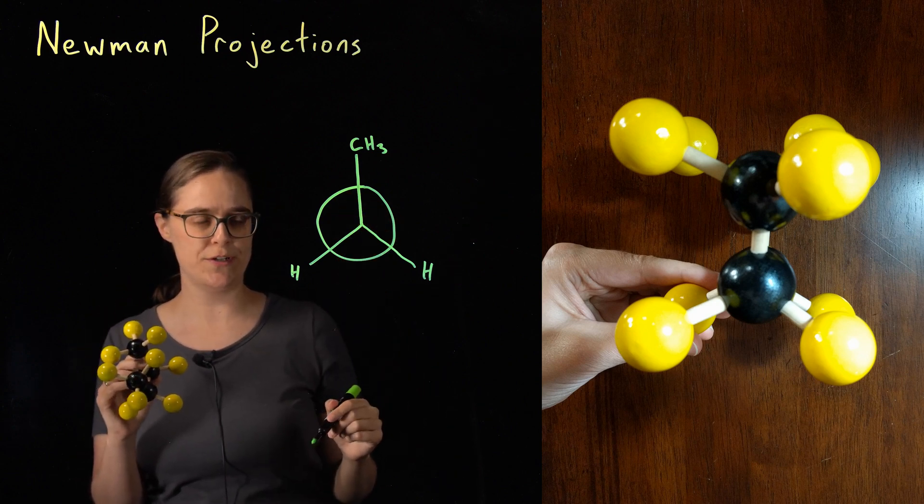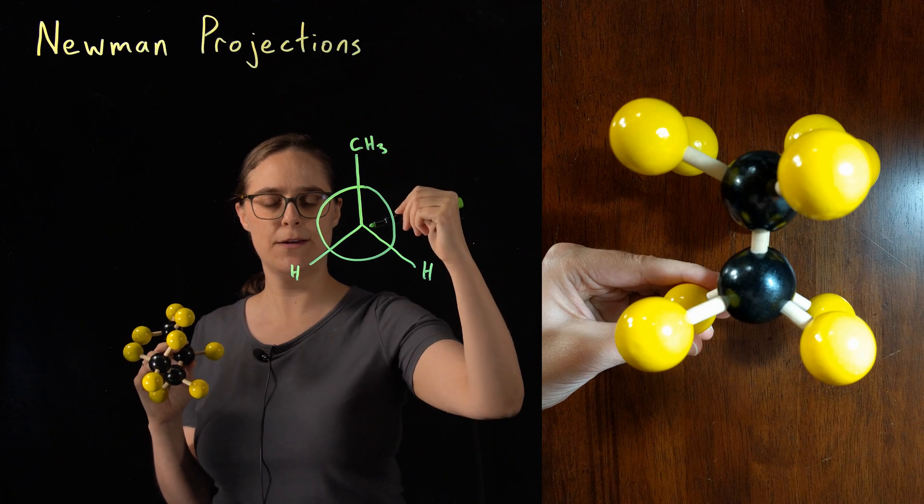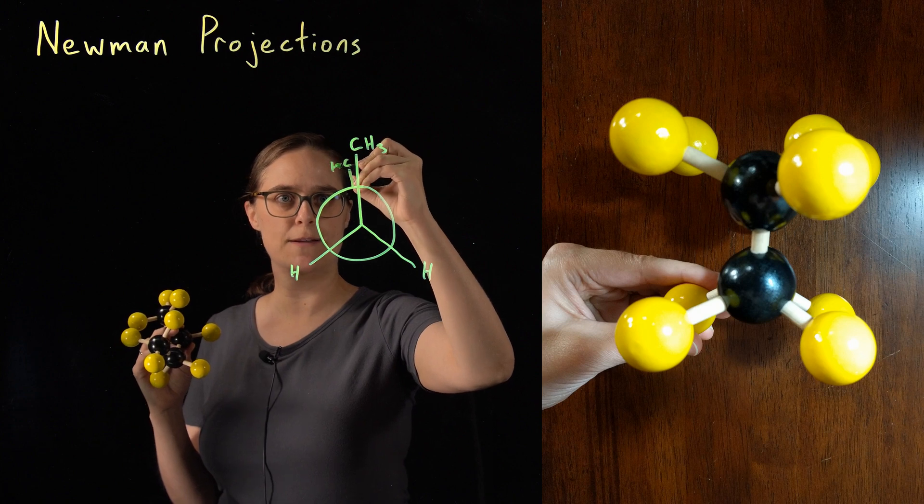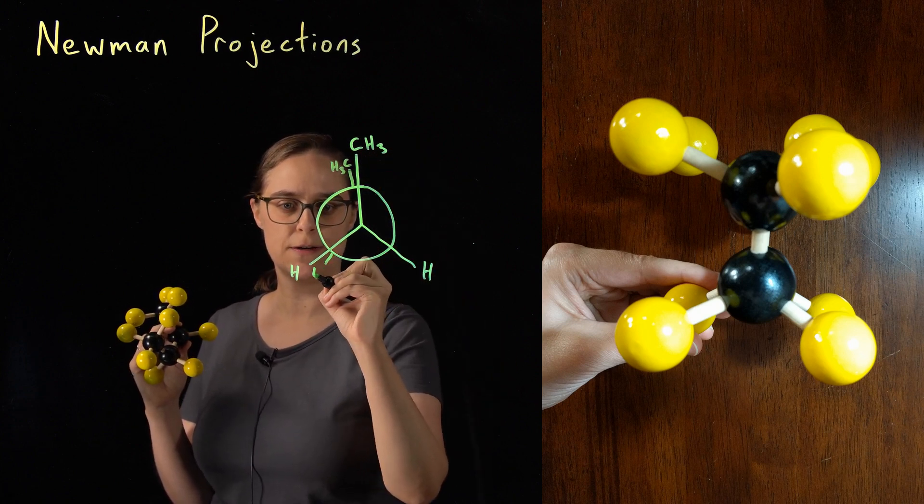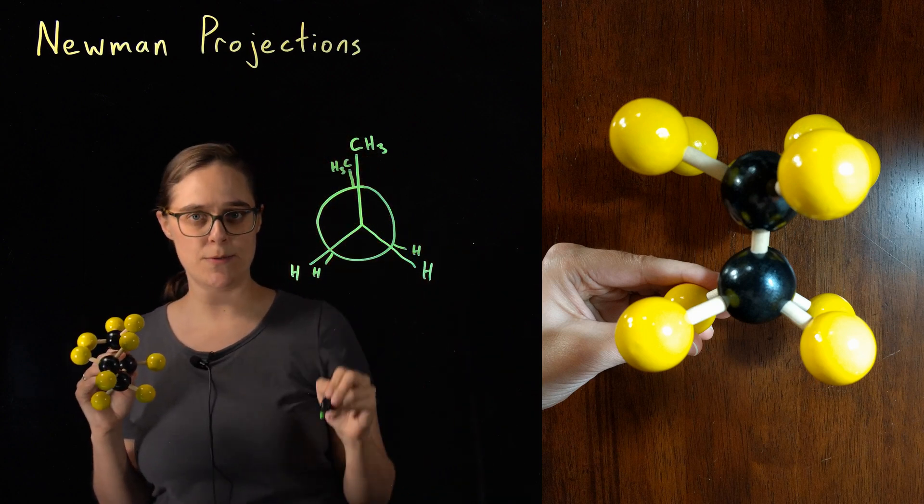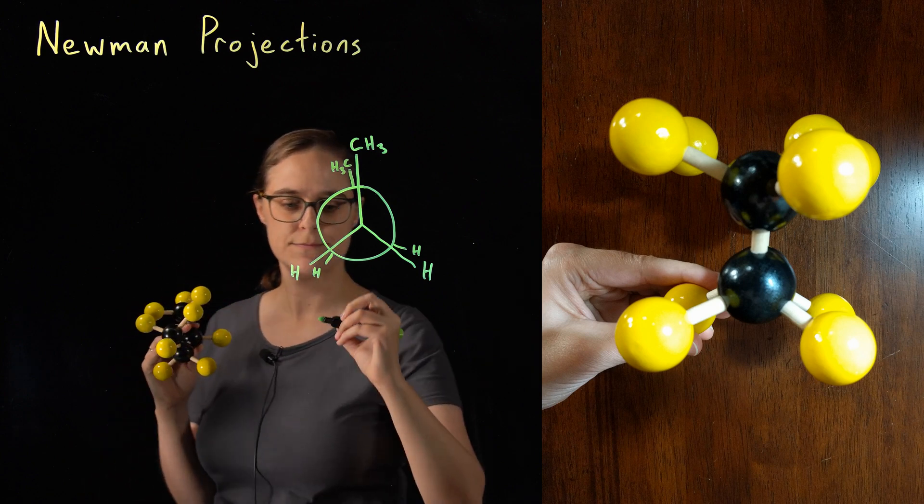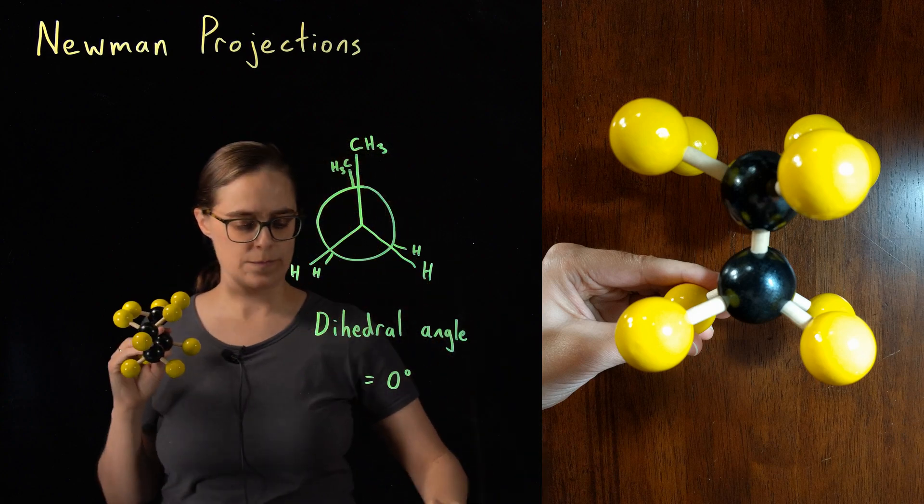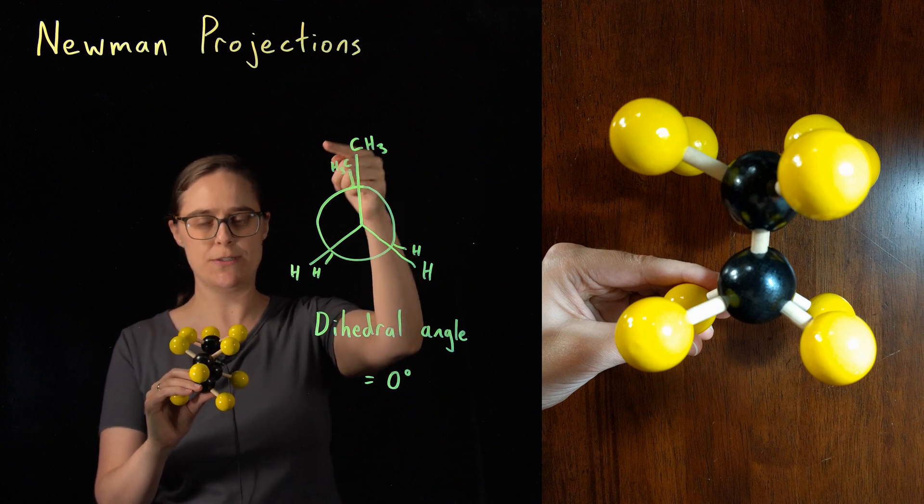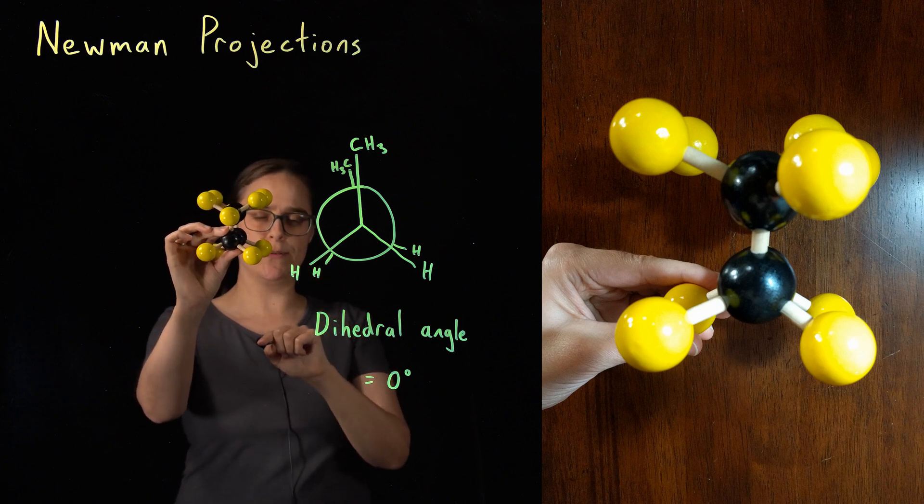That makes this Newman projection hard to draw. I need to draw another CH3 group immediately behind this one, but on the back carbon. There's not a perfect way to do that, so we just draw it as close as we can. Same with the two hydrogens on the back carbon. But I can describe this particular conformation as having a dihedral angle of zero degrees. Dihedral angle is referring to the angle between these two CH3 groups, between the two large groups, as it appears when we align carbons two and three in our line of sight.